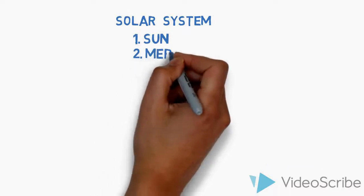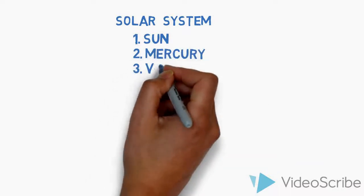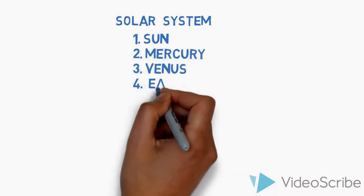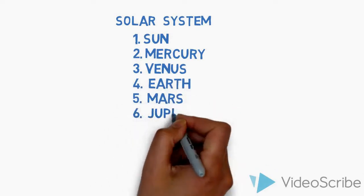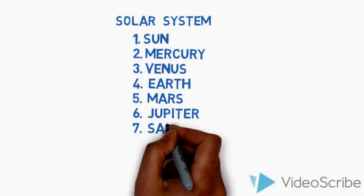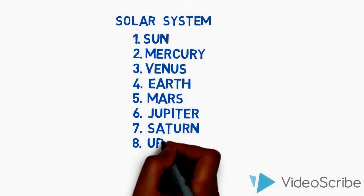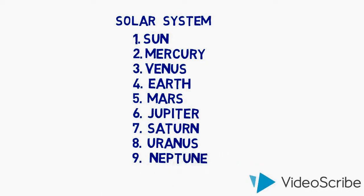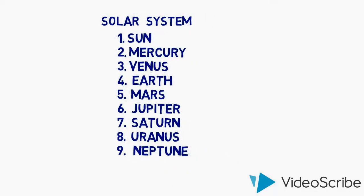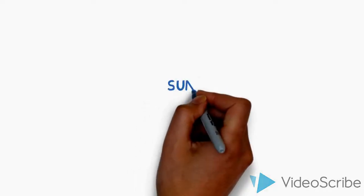1 Sun, 2 Mercury, 3 Venus, 4 Earth, 5 Mars, 6 Jupiter, 7 Saturn, 8 Uranus, 9 Neptune. We will see three basic properties of each object. Later in the next video we will see every planet in details.